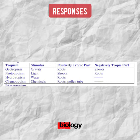The name of a response depends on the type of stimulus causing it. Looking at the table: geotropism — 'geo' comes from gravity — the part that grows towards gravity (the ground) are roots, making roots a positively tropic part. Shoots grow away from the ground, making them a negatively tropic part.